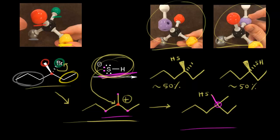Finally, let's go through the hybridization states of this carbon in red one more time. For our starting alkyl halide, the carbon in red is sp3 hybridized, so it has tetrahedral geometry. When we formed our carbocation, the carbon in red is now sp2 hybridized, so it has planar geometry. But for our products, we're back to an sp3 hybridized carbon with tetrahedral geometry, so we have to think about the stereochemistry.